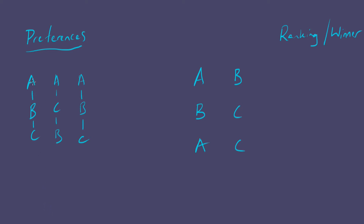A is preferred over B by the first voter. A is also preferred over B by the second voter — it's inferred by transitivity the way I've drawn it here, but that clearly means A is preferred over B. And the third person also prefers A over B. So in fact it's unanimous, not merely a majority. And if you ever have a majority preferring one over the other, you put it in the social ranking.